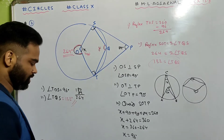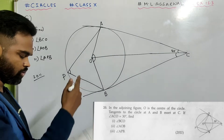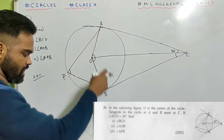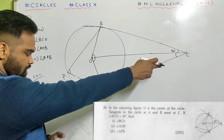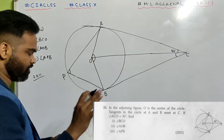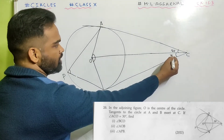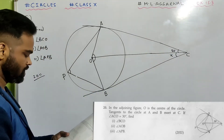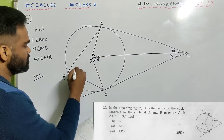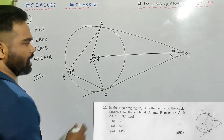Now look at sum number 20. In the adjoining figure, O is the center of the circle. Tangents to the circle at A and B meet at C. If angle ACO is 30 degrees, find angle BCO, angle AOB, and angle APB. Let's call angle BCO as X, angle AOB as Y, and angle APB as Z.